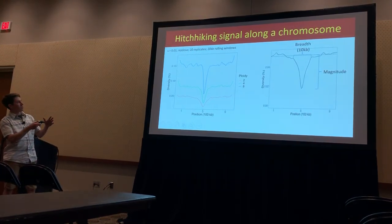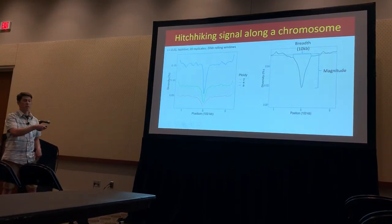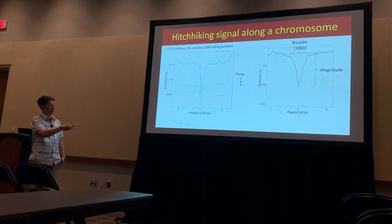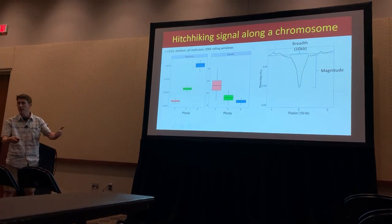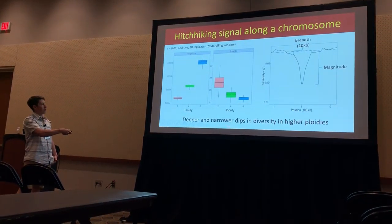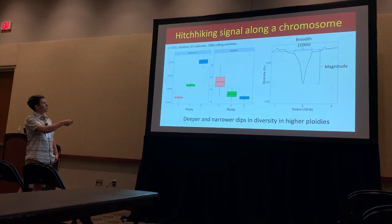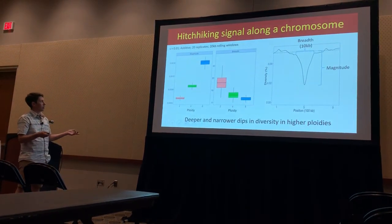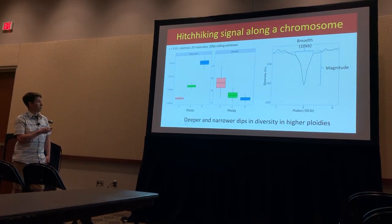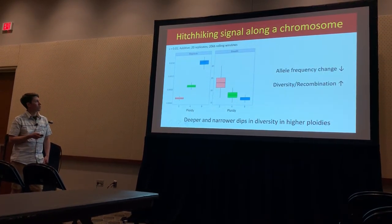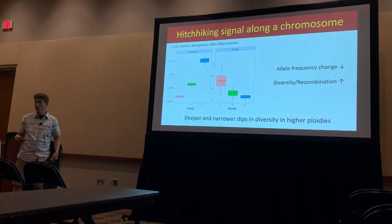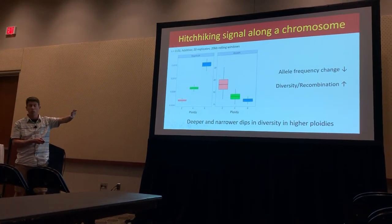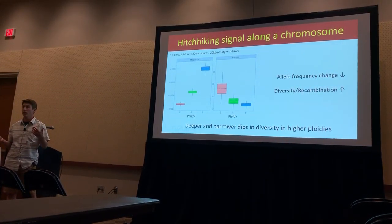We can summarize this more directly by measuring these dips directly — measuring the breadth when they start to dip down, and the magnitude, how far down they go. This restates what I just said: deeper and narrower dips in diversity for higher ploidies, and shallower, broader dips in diploids. But I can't tell you yet if this is due to allele frequency change differences or due to differences in diversity and recombination.